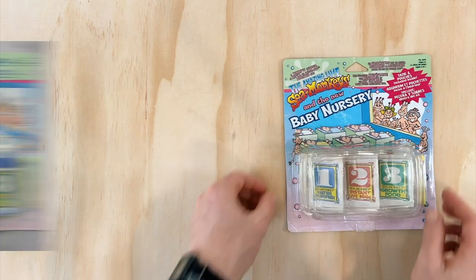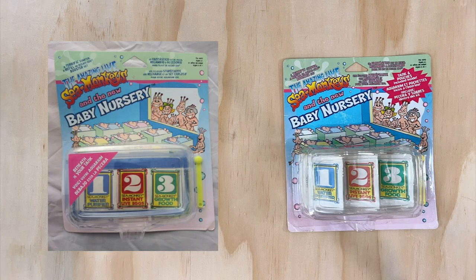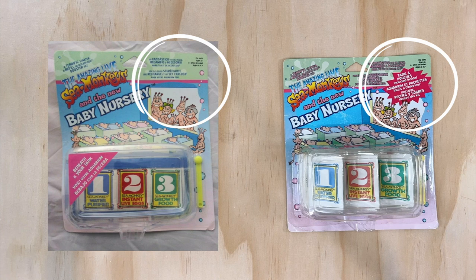While researching this item, I did come across another packaging variant, which I think is probably a precursor to the one I have here. They're very similar, but there are a couple of minor differences. The first is that this red star shaped graphic is missing, which tells you the contents of this kit.